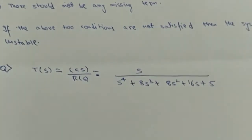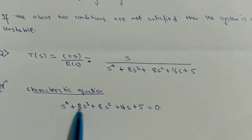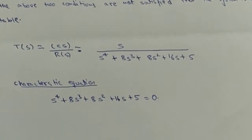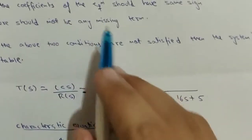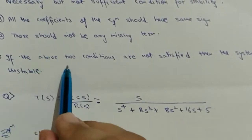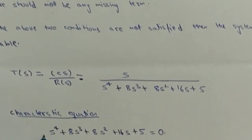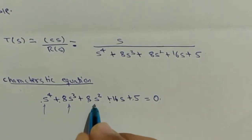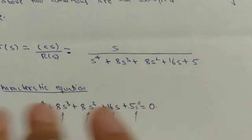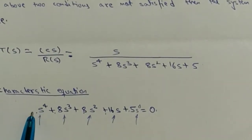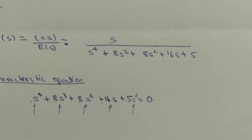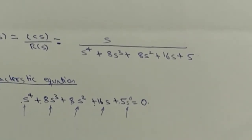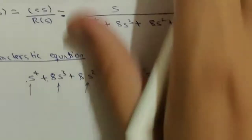First we write the characteristic equation of the system by equating the denominator to zero: s^4 + 8s^3 + 8s^2 + 16s + 5 = 0. Then we check if the system is unstable. Here we see all coefficients have the same sign, and s^4, s^3, s^2, s^1, and s^0 are all present — no missing terms. So the system is not unstable. Note: system is not unstable — we are not yet completely sure if the system is stable.